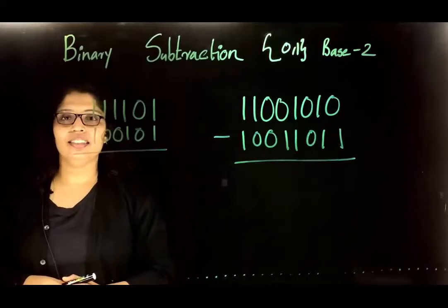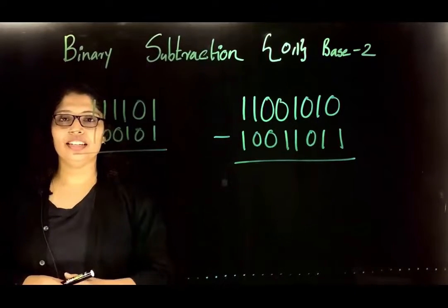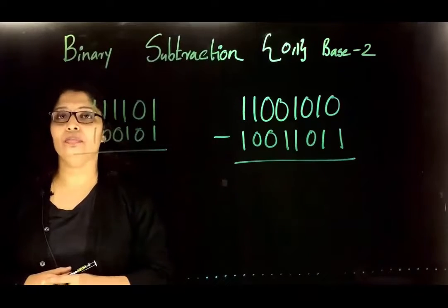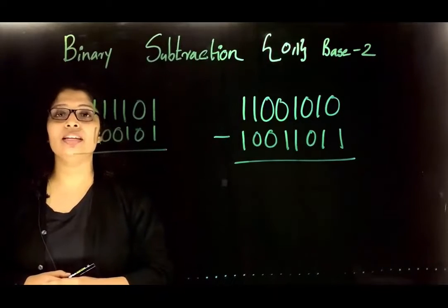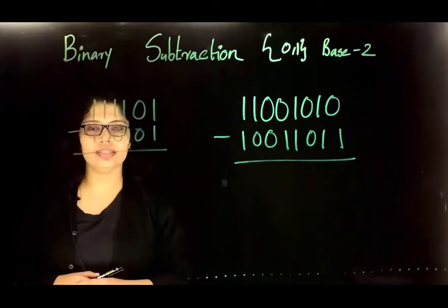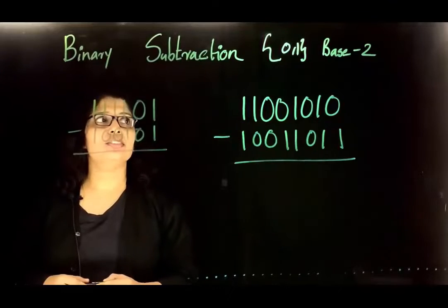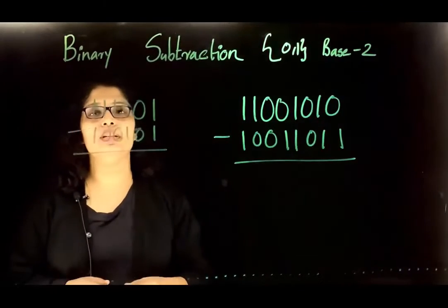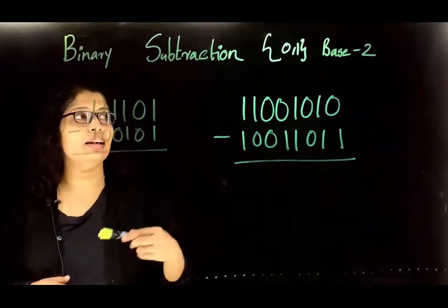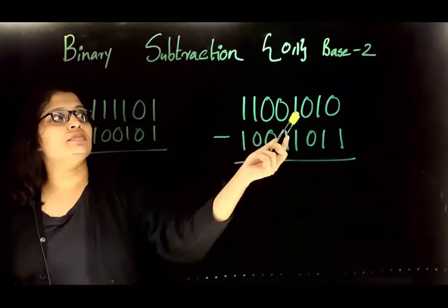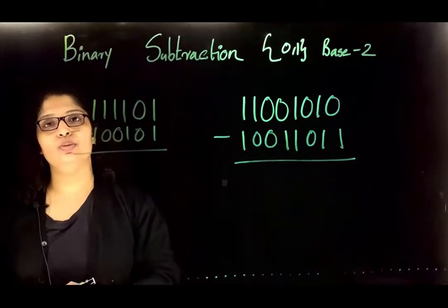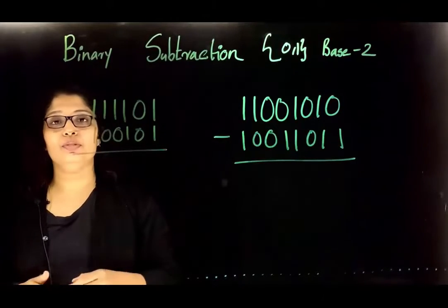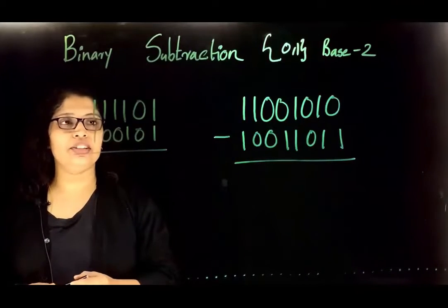In this video we learn how to perform subtraction operations over binary system, octal system, and hexadecimal system. Before that, remember these points: in binary system we have two symbols, 0 and 1, and binary means it is a base 2 system.